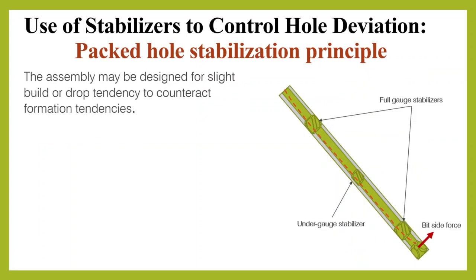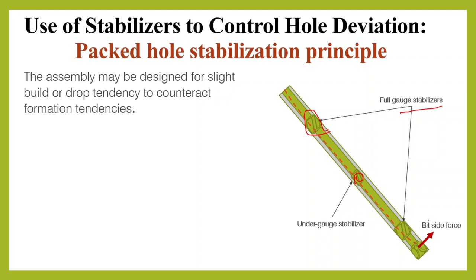For example, in this BHA the first and third stabilizers are full gauge stabilizers, and the second one is an under gauge stabilizer. So the drill string will sag at this point — at this stabilizer — because it is under gauge, causing the bit side force to move upward. It is also possible to run a locked assembly using a second stabilizer which is somewhat under gauge, as we see in this figure. When the bit side force is on the high side, this leads to an additional build tendency, because the under gauge stabilizer sags down and makes the BHA act like a building BHA.